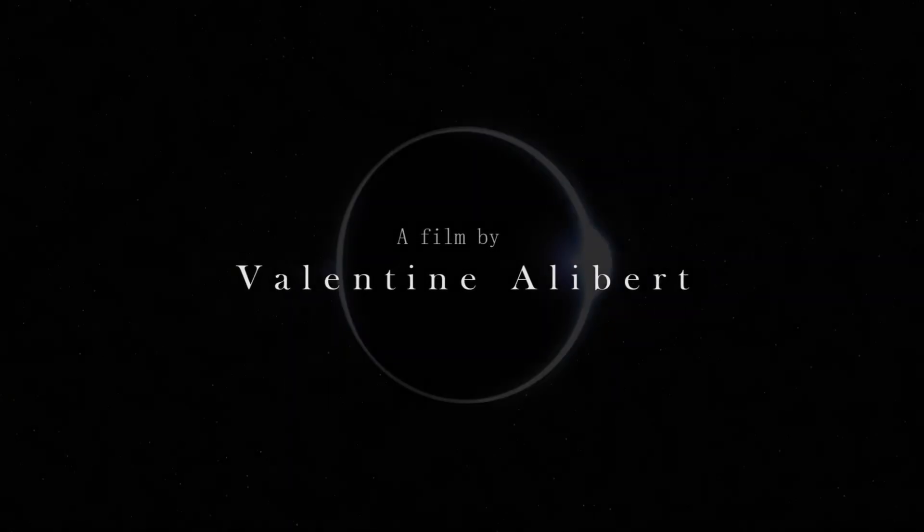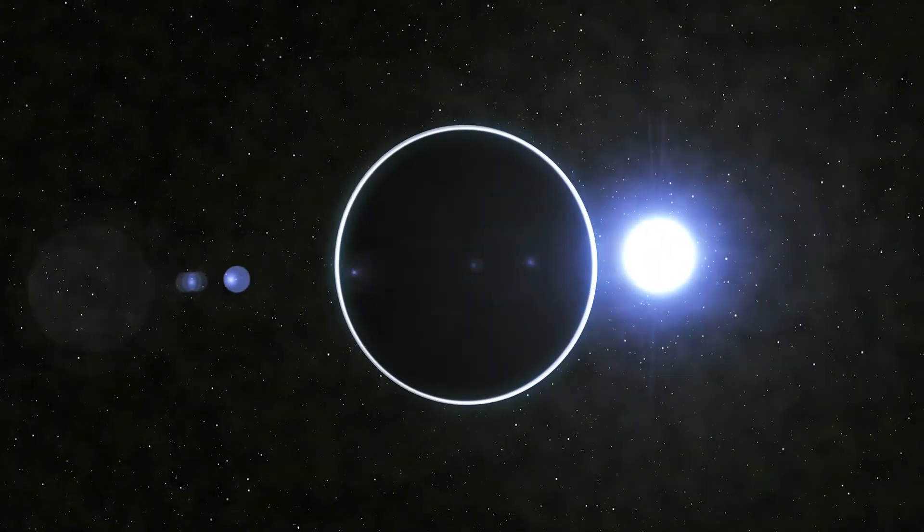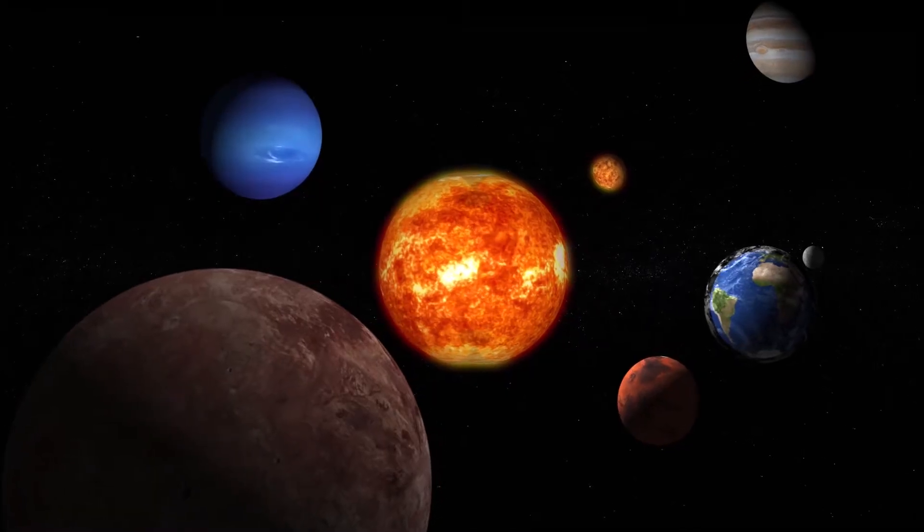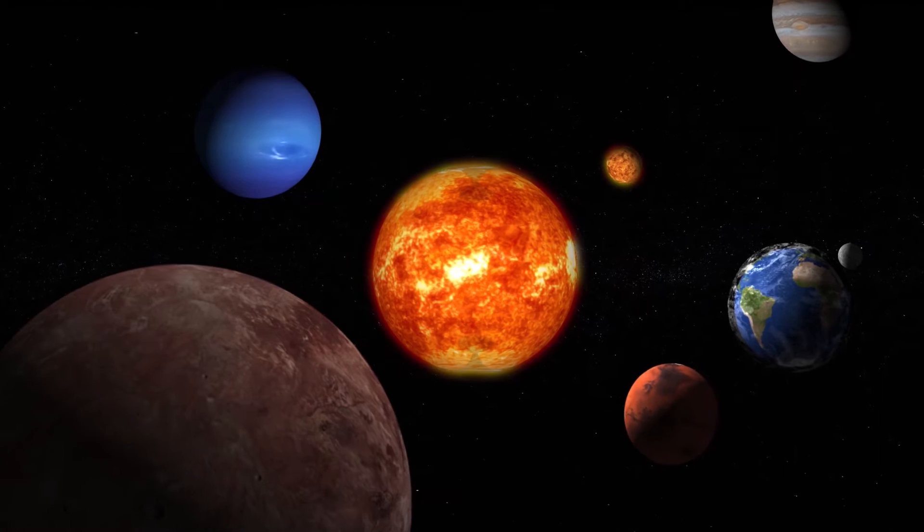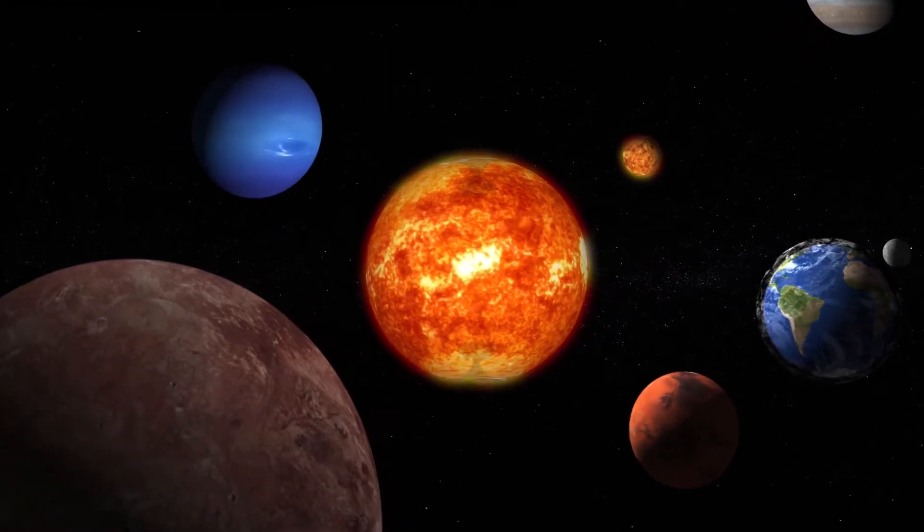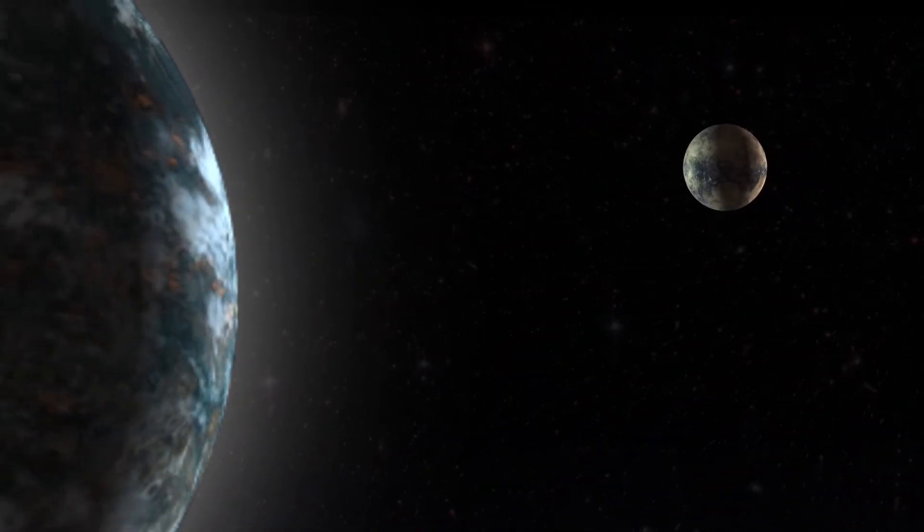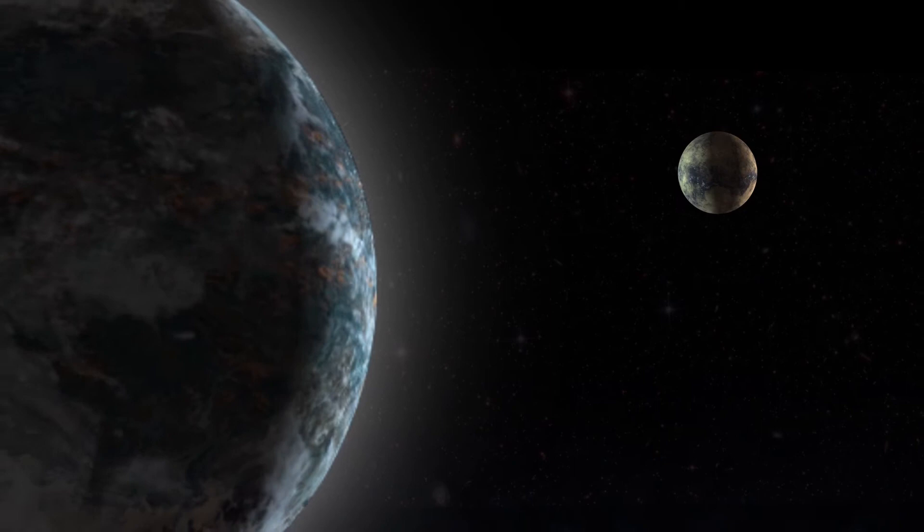Nestled in the depth of the cosmos, countless worlds scattered across an infinity of galaxies question the uniqueness of our existence on Earth. Some of them show characteristics that are sometimes surprisingly similar to those of our planet. Hidden hundreds of light years away, some are just at the edge of our solar system.